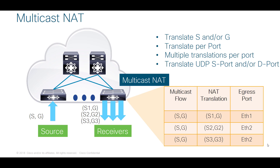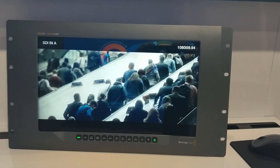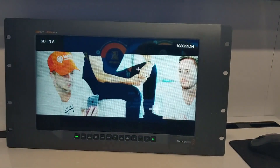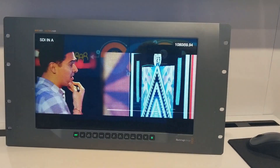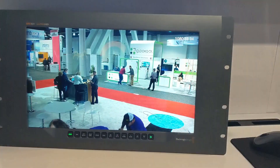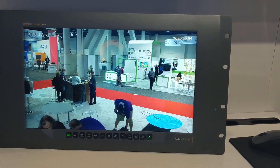A simple use case of this feature is in the broadcast industry, where sometimes you have receivers or destinations that only listen to a single multicast group address. If you want to route different sources to that destination, multicast NAT could be leveraged. This destination is actually listening to a single group, and leveraging NAT, I'm routing different sources to this destination. You can see the screen transition from one video feed to another.